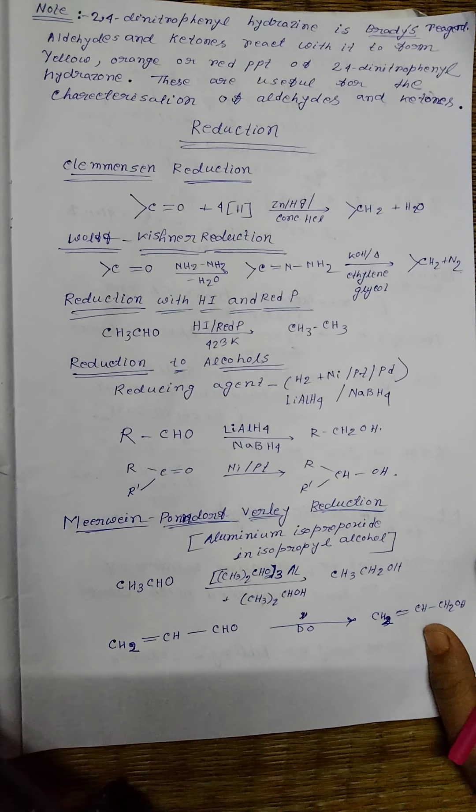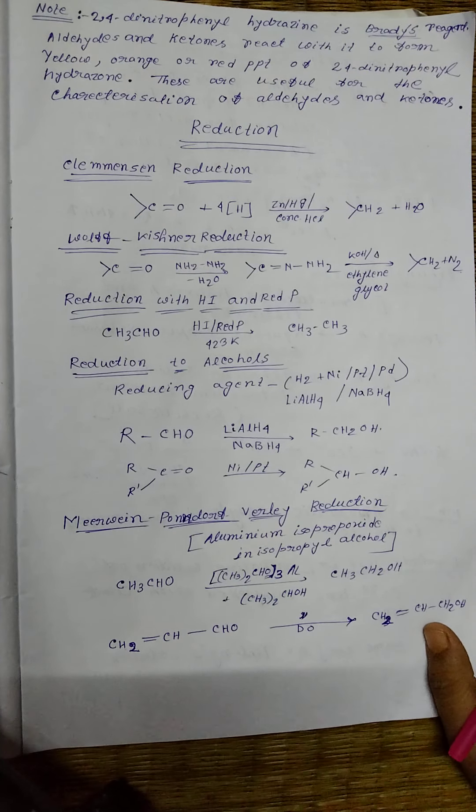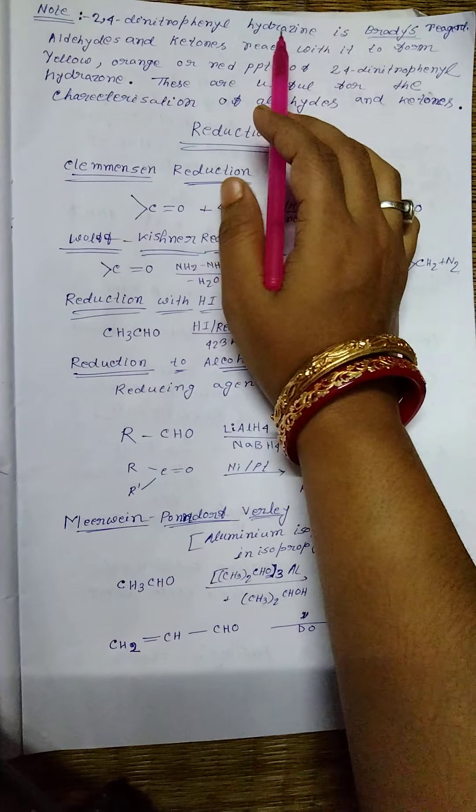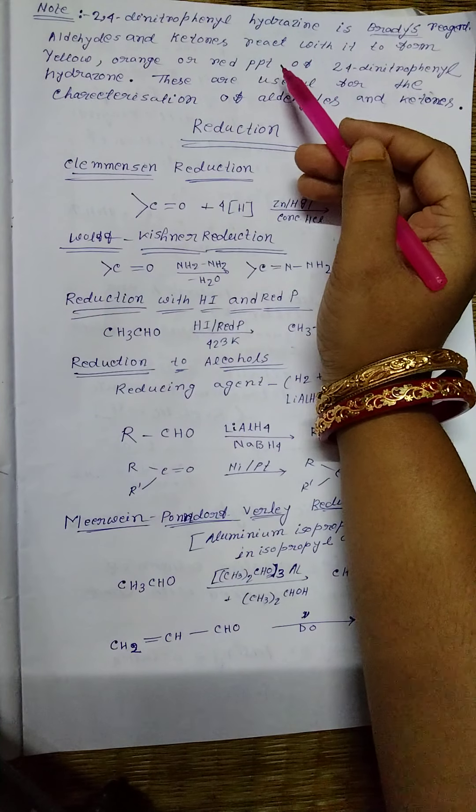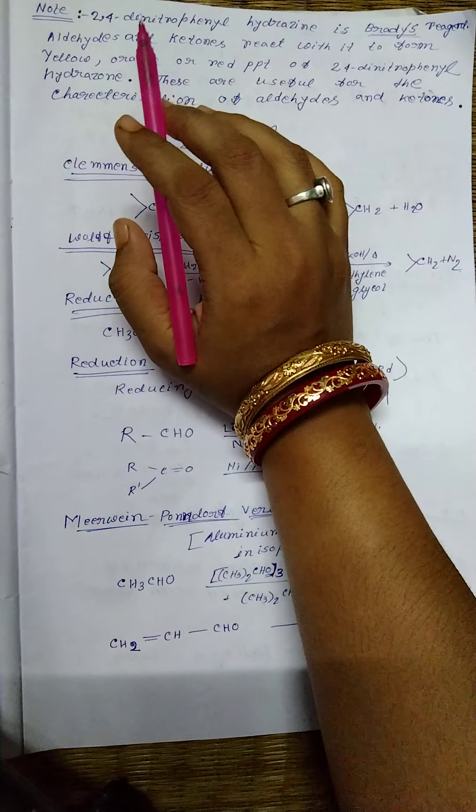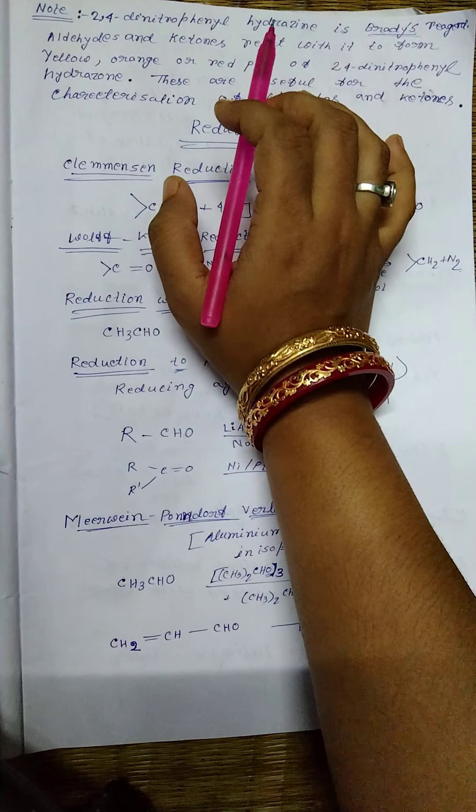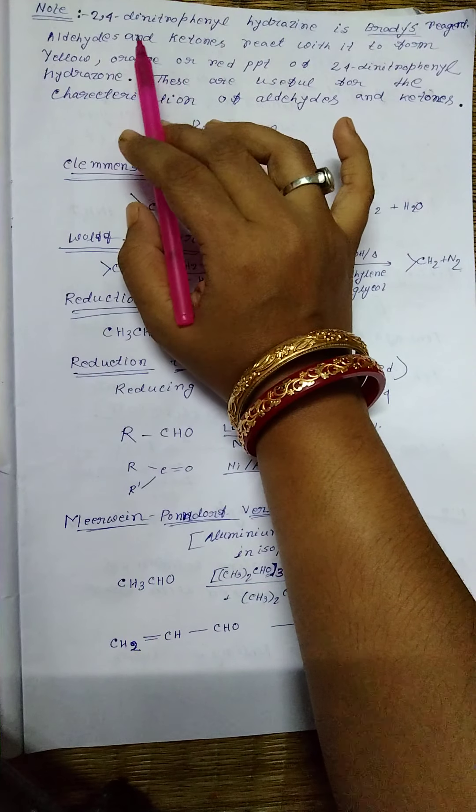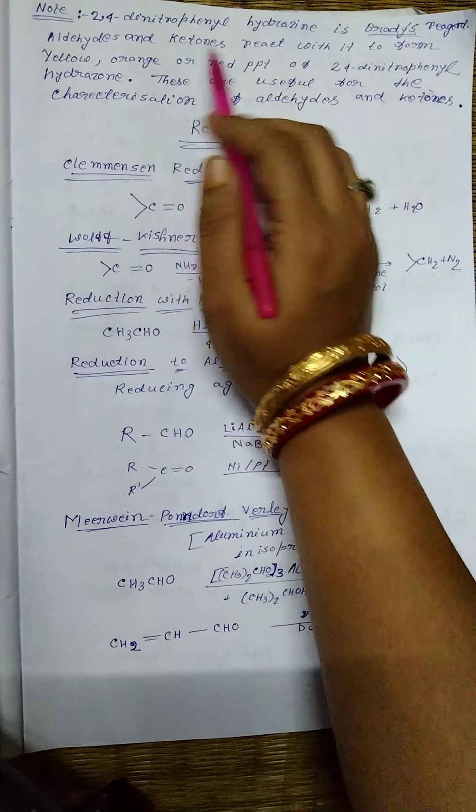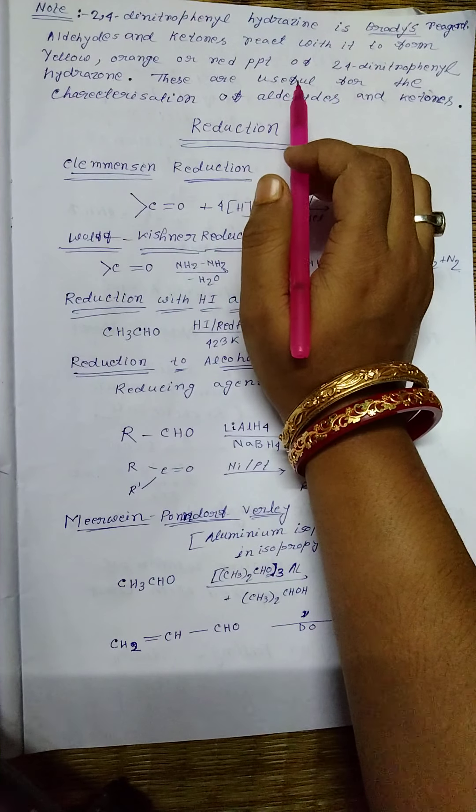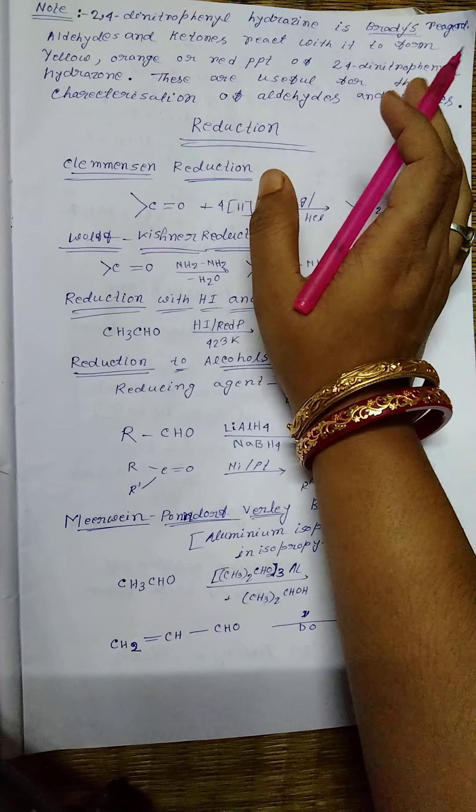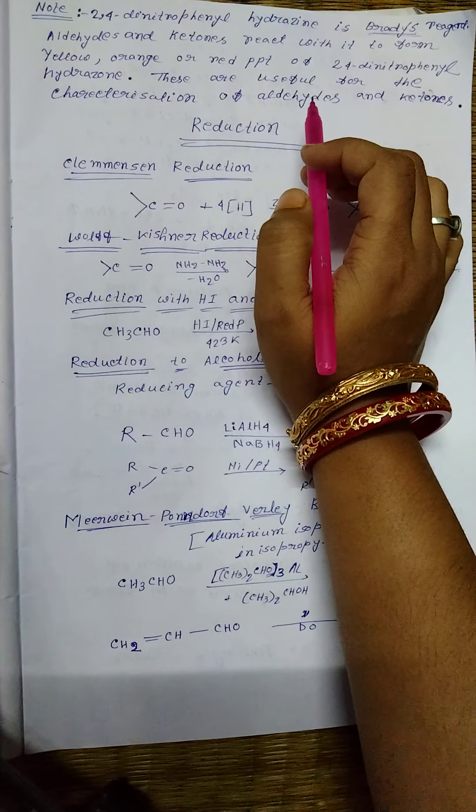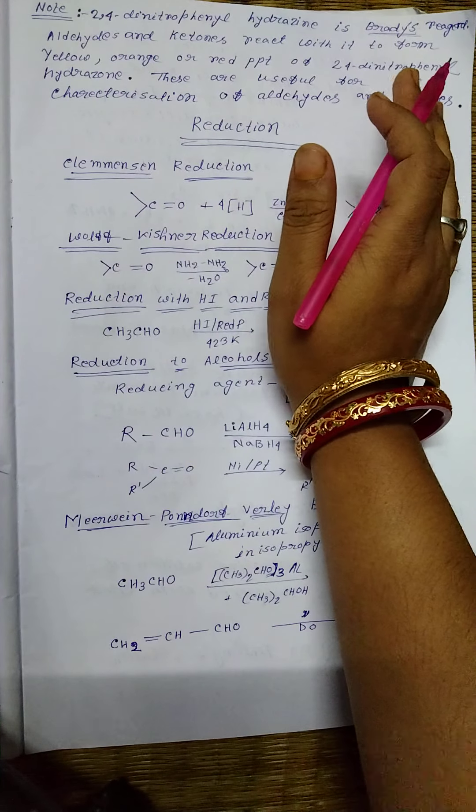Dear students, in the previous video you already learned about the reaction with 2,4-dinitrophenyl hydrazine with carbonyl compounds. You must remember that this 2,4-dinitrophenyl hydrazine is known as Brady's reagent, and aldehydes and ketones react with it to form different colored precipitations like yellow, orange, or red PPT. These are useful for the characterization of aldehydes and ketones.